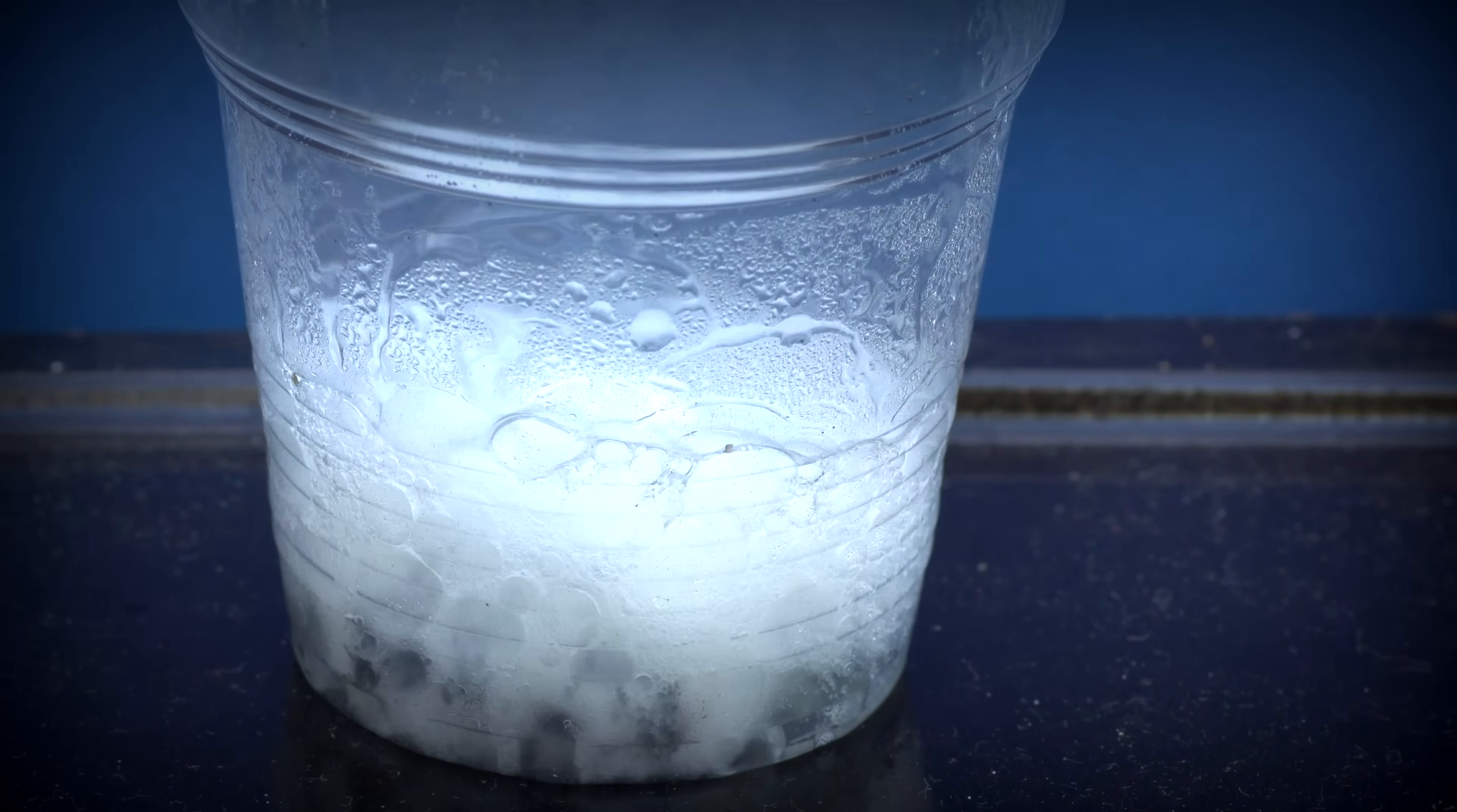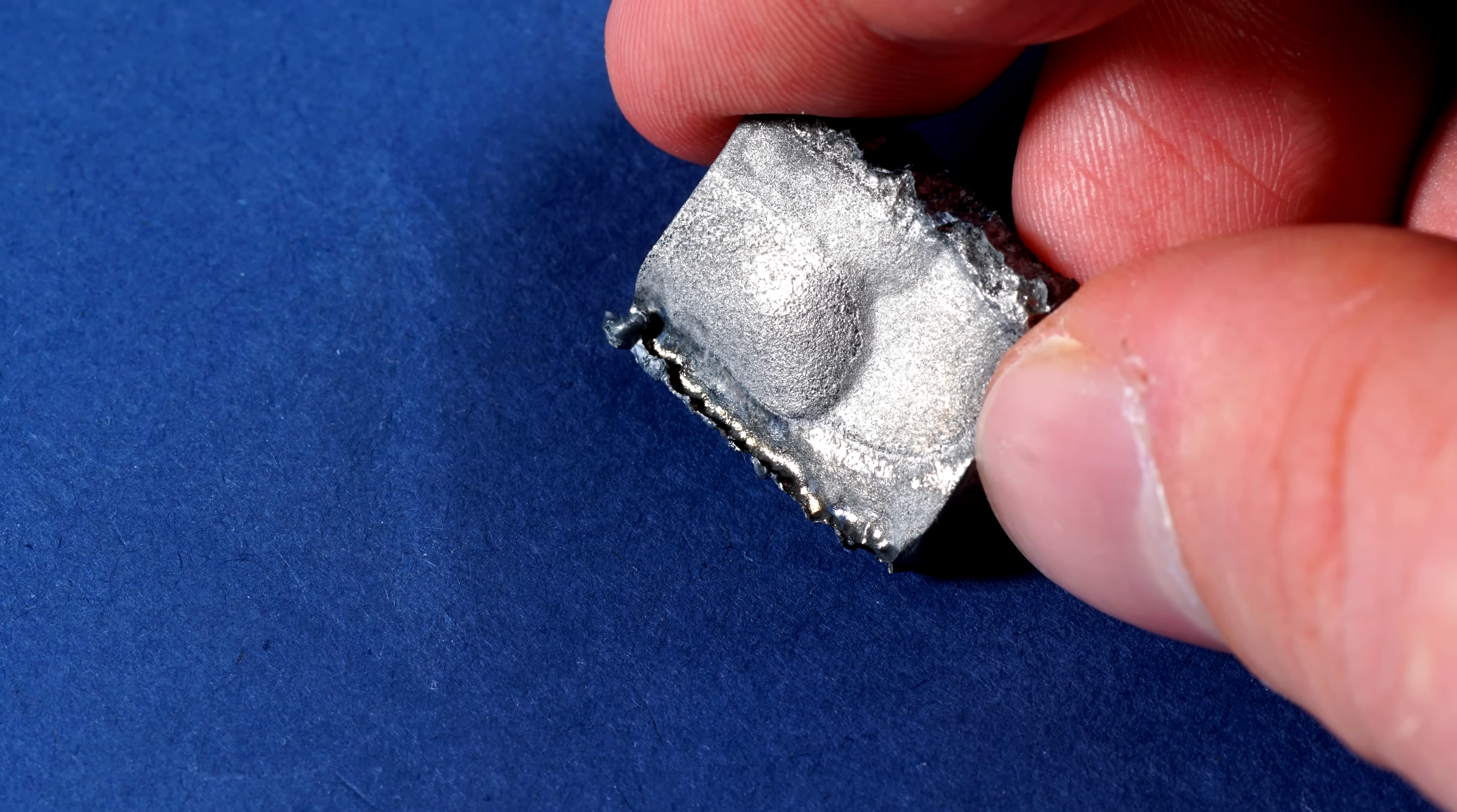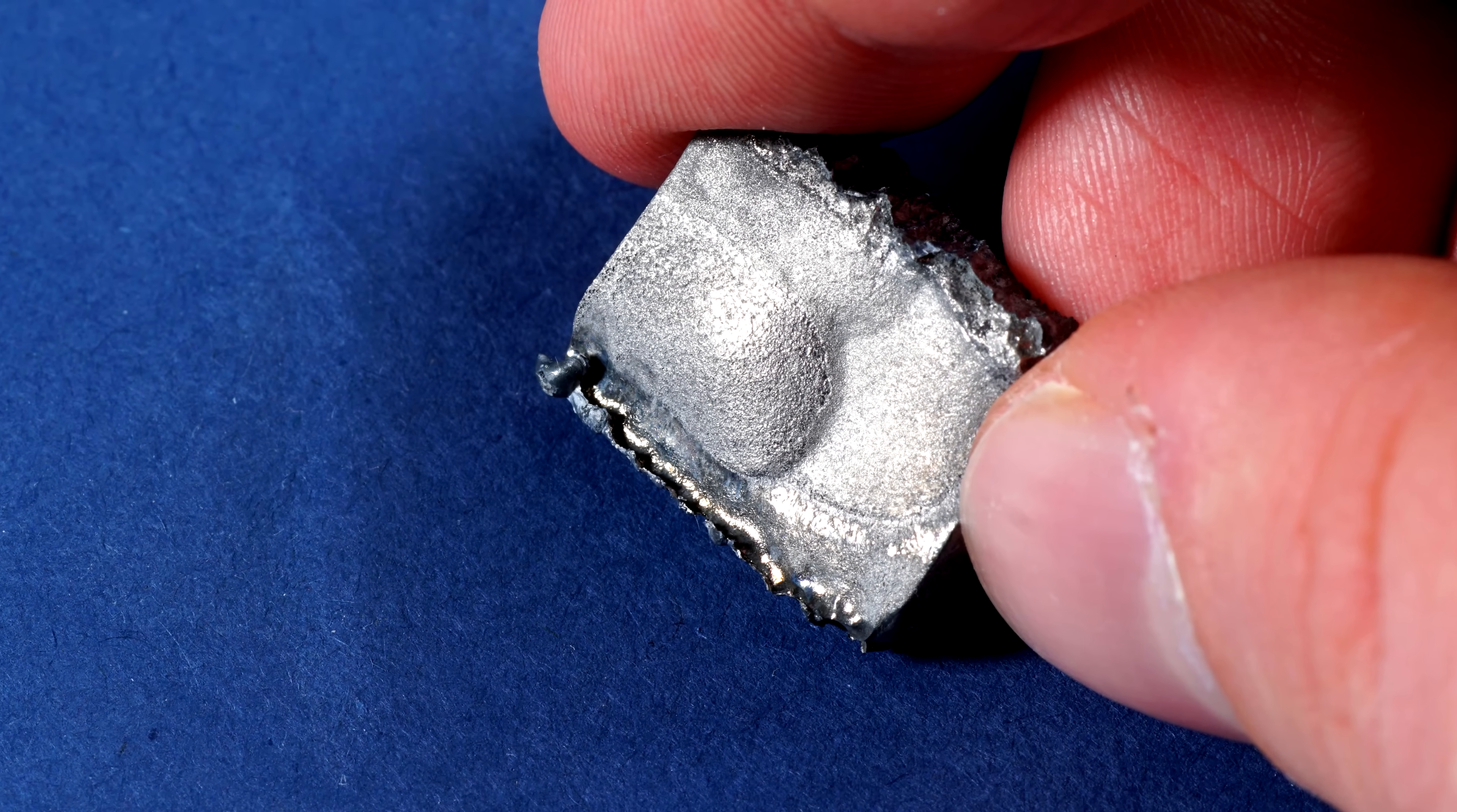During this reaction, the dark oxide layer disappears off the surface of the metal, which makes the hafnium exposed shiny again.